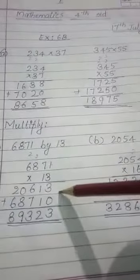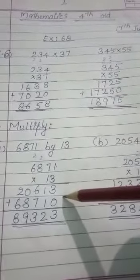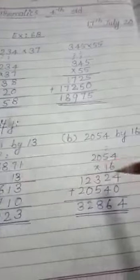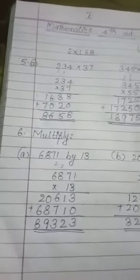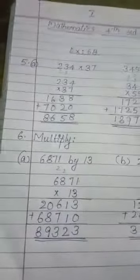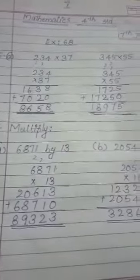Some more questions are here. You just go through the questions. All are simple multiplication of numbers. Revise the table and try to do the questions yourself. Today you have to complete exercise 6B, questions 5, 6, and 7. Okay, thank you.